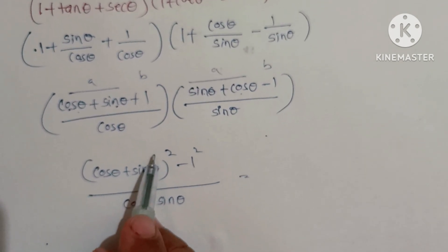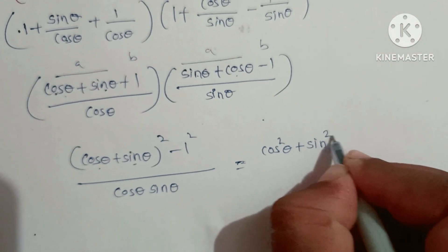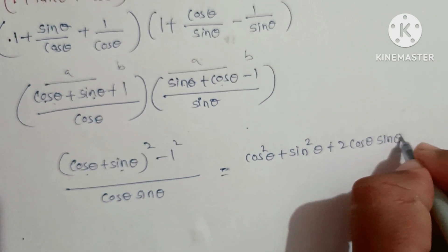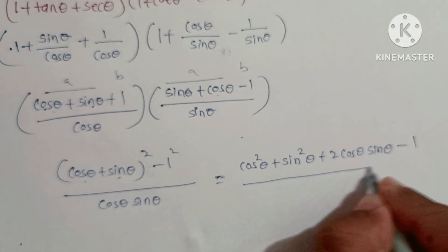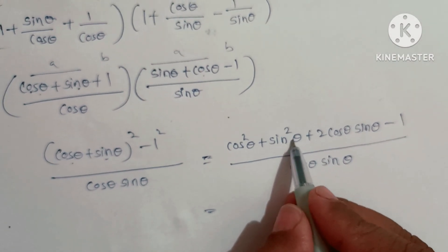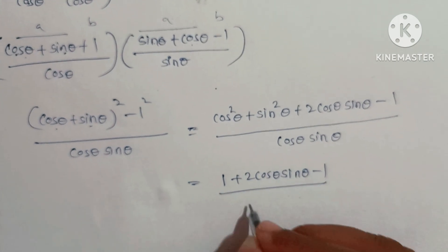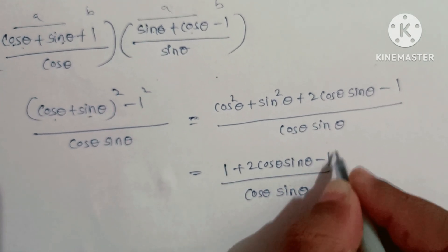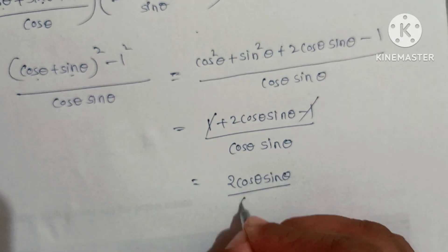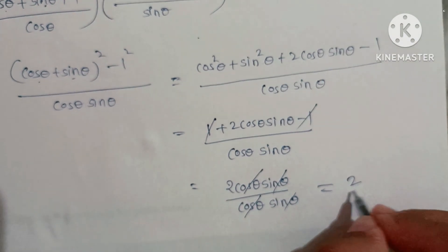Expand (cosθ + sinθ)² to get cos²θ + sin²θ + 2cosθ·sinθ, which equals 1 + 2cosθ·sinθ. So numerator becomes 1 + 2cosθ·sinθ - 1 = 2cosθ·sinθ. Dividing by cosθ·sinθ, both cancel, so the answer is 2.